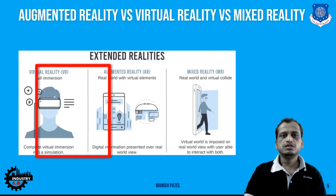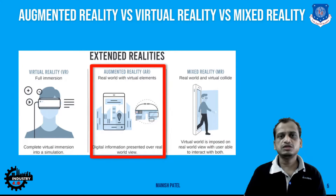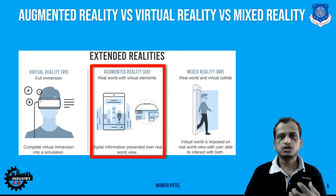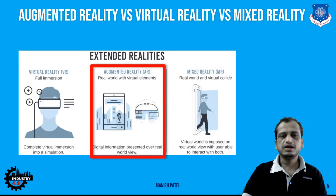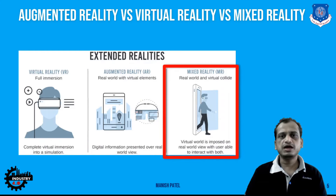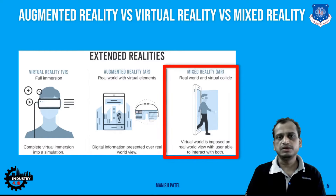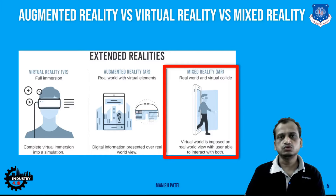Then we have augmented reality, as we have seen — using smart glasses or Google Glass, perceptual information is overlaid on the camera view so you can get more information from the virtual world. Finally, we have mixed reality, where the user can interact with both virtual objects and the physical world at the same time. The prime example of mixed reality is the Microsoft HoloLens, and Microsoft is also coming up with the HoloLens 2.